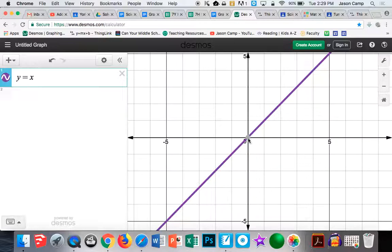No matter what x is, y is the same. So when x is 1, y is 1. When x is 2, y is 2. When x is 3, y is 3. So all those spots end up being exactly the same.